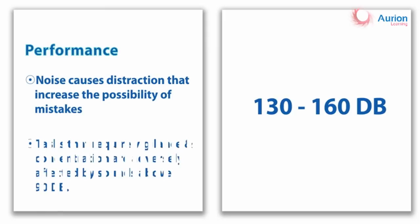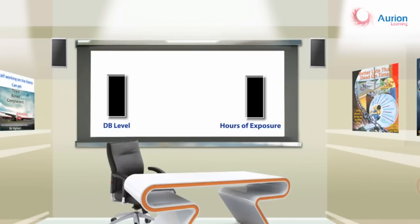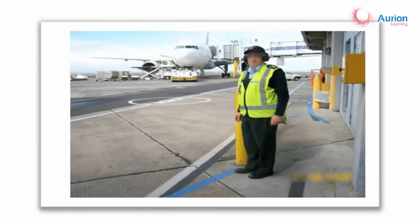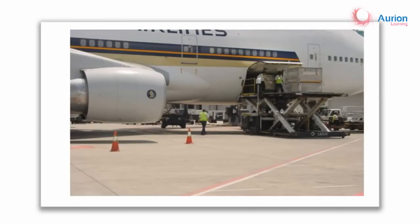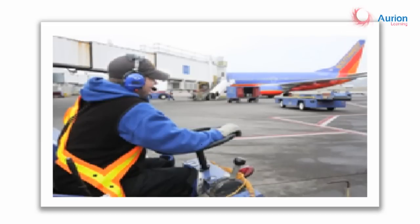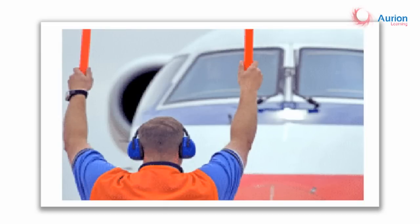Noise can also interfere with normal speech, making it difficult to understand. Finally, sustained exposure to noise affects performance by causing distraction and increasing the possibility of mistakes. Since we now know that noise adversely affects our health and performance, we need to always take steps to protect our hearing. The first step is to be aware of the noise level we are being exposed to and ensuring that we limit our actual hours of exposure.